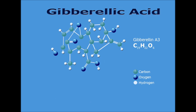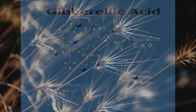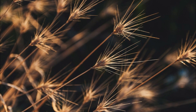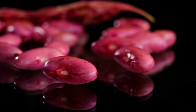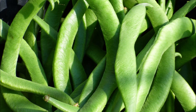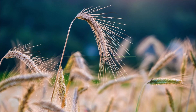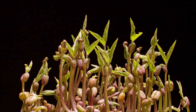Gibberellins are one of the longest known classes of plant growth hormones. They regulate various developmental processes including stem elongation, germination, dormancy, flowering, flower development and leaf and fruit sequences. In other words, gibberellins help plants grow taller and help them with fruit setting and the flowering process as well.